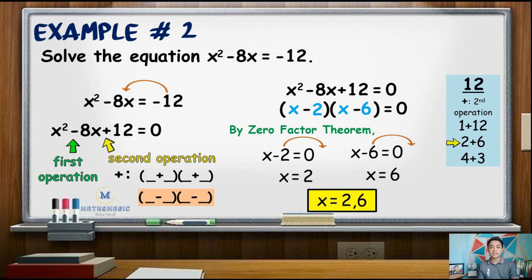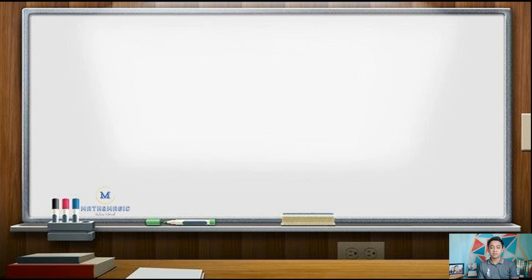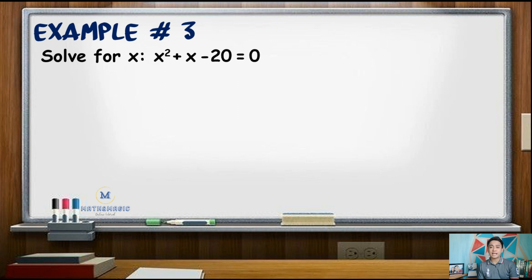For our third example, solve for x of the quadratic equation x squared plus x minus 20 equals 0. In this example, the equation is already equated to zero, so we proceed to factoring.